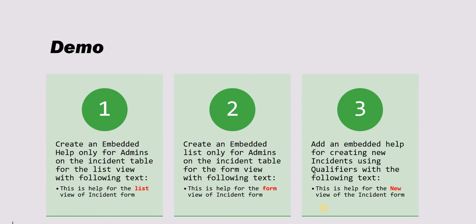The third use case is creating embedded help using qualifiers. We need qualifiers when we want to show embedded help based on different query parameters in the URL — for example, 'id equals minus one', or based on a view or other query parameters. In this use case we will create a qualifier for incident records that are new, which is useful when someone is creating an incident for the first time and may be confused about which fields to fill.